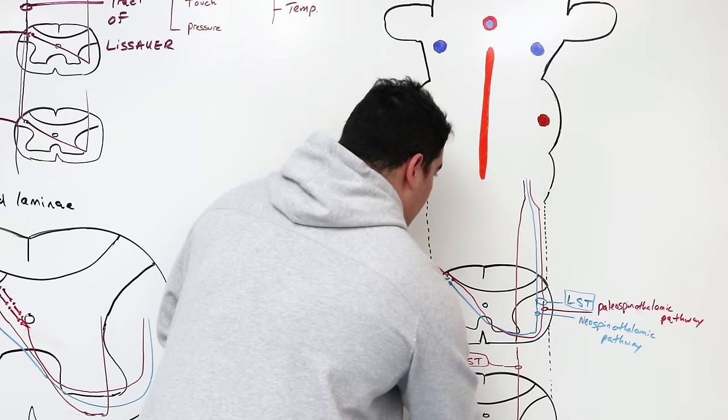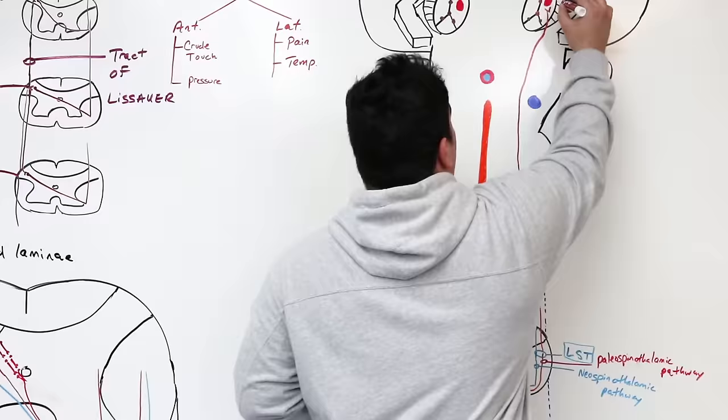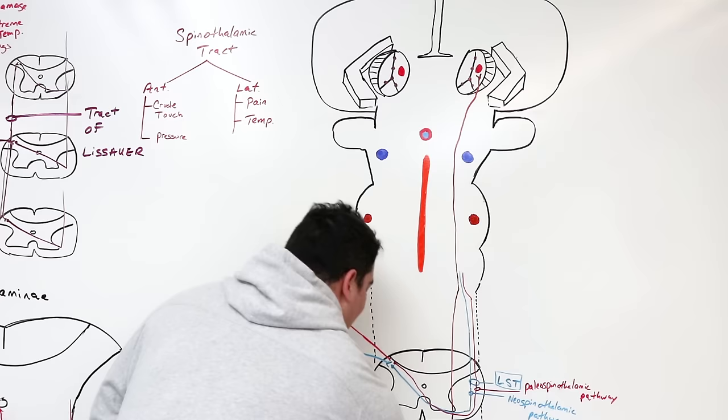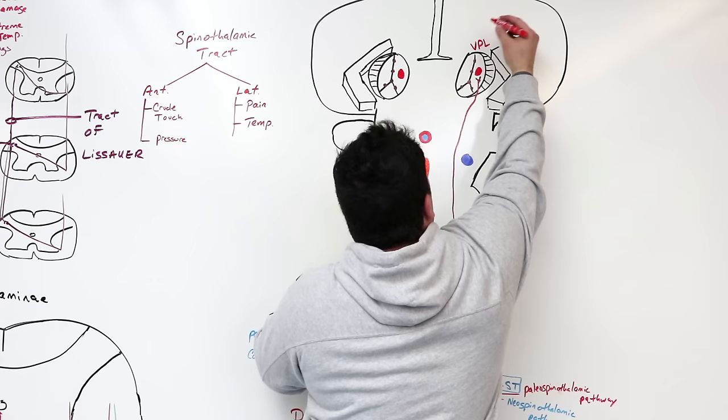As they move upward, they give off certain structures. The ventral spinothalamic tract — carrying crude touch and pressure — mainly goes up to a specific nucleus within the thalamus: the ventral posterior lateral nucleus, and another called the ventral posterior inferior nucleus. Most of these crude touch and temperature sensations are going to these thalamic nuclei.